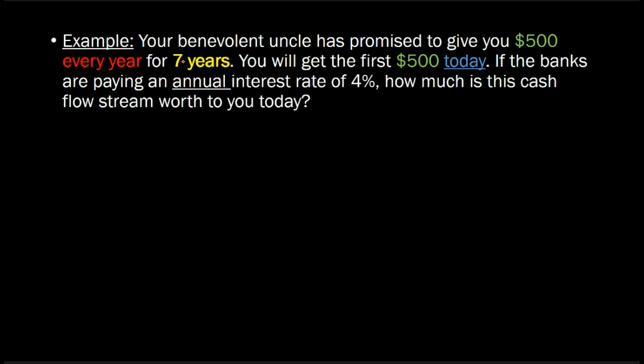So let's take this example of our rich and benevolent uncle who promises to give you $500 every year for seven years. So we know it's an annuity because you're going to get the same cash flow, $500, at regular intervals of one year, for seven years. However, your uncle says that he's going to give you the first $500 starting today.